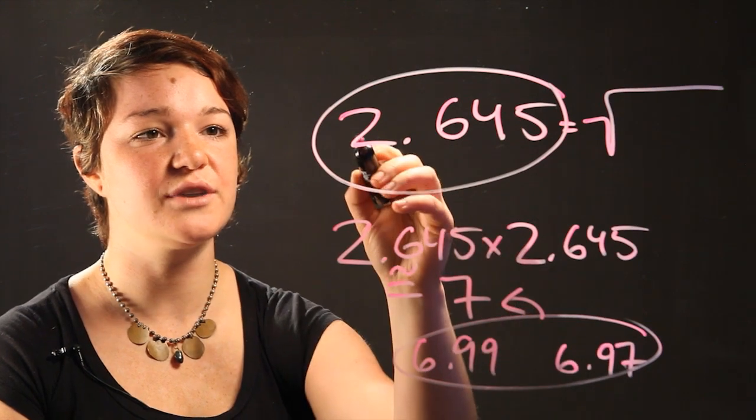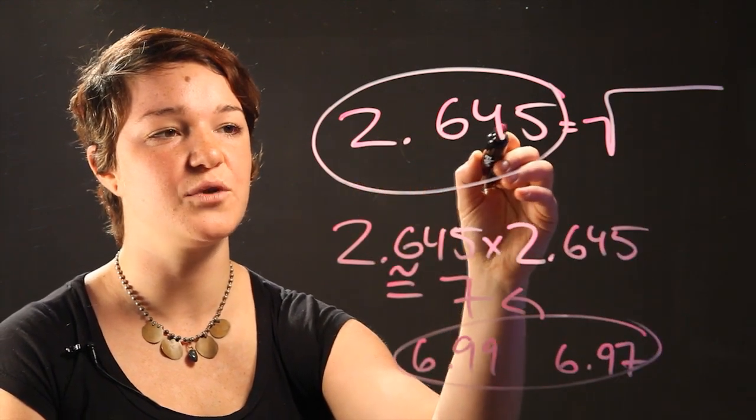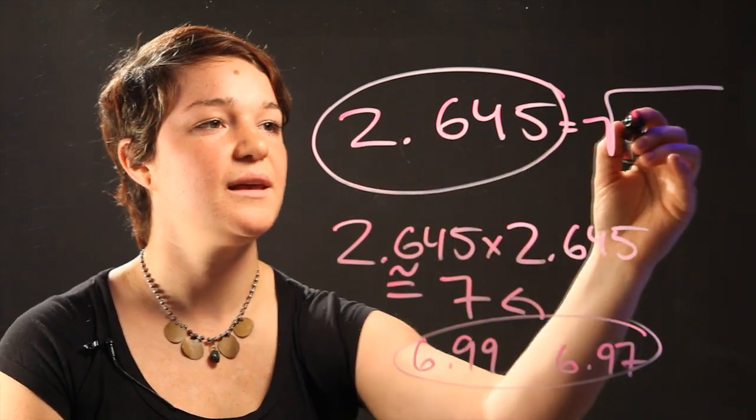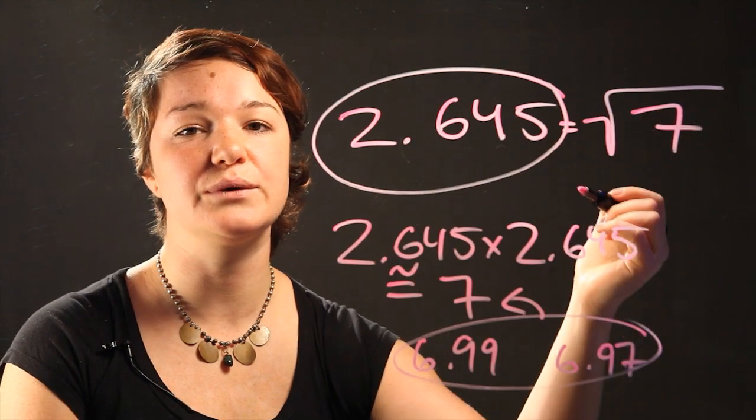So in order to convert 2.645 into a radical, it is equal to the square root of 7.